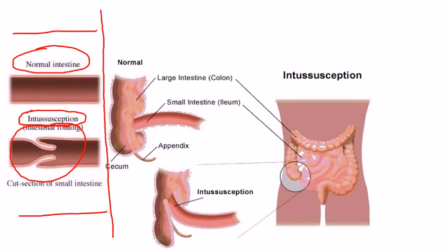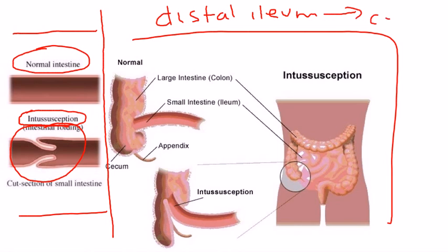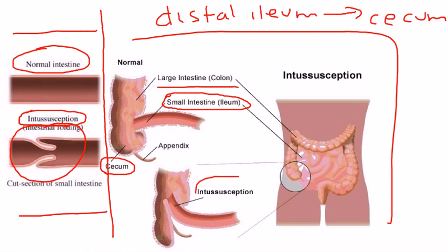This eventually leads to a lot of problems, including ischemia and perforation — we'll talk more about that later. Most commonly, the portion involved is the distal ileum, pretty much the very end of the small intestine, and it telescopes into the cecum, which is right at the beginning of the large intestine. The telescoping is happening right in that location.